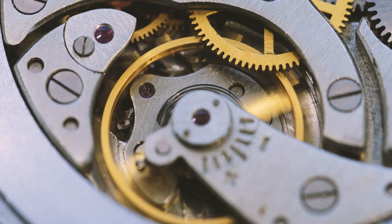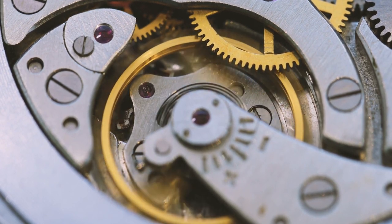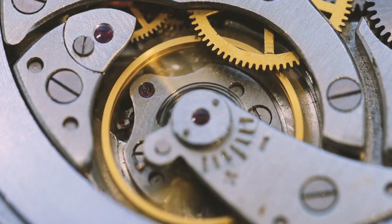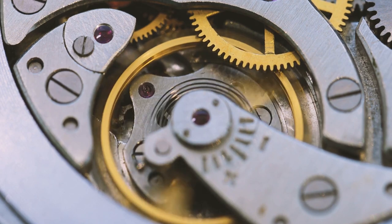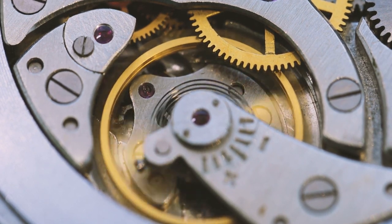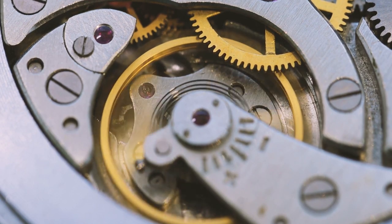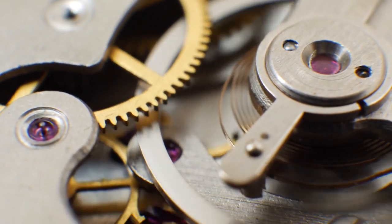To meet these standards, mechanical wristwatches must not lose 4 seconds or gain 6 seconds on average each day for 15 days of continuous operation. Furthermore, the standard deviation must be less than 2 seconds per day. This means that each second the mechanical watch produces must be 99.998% accurate.